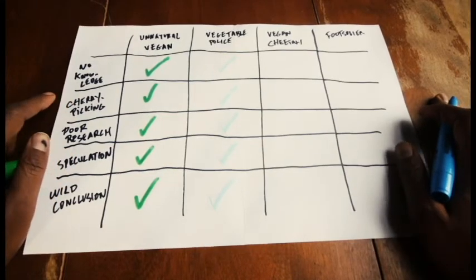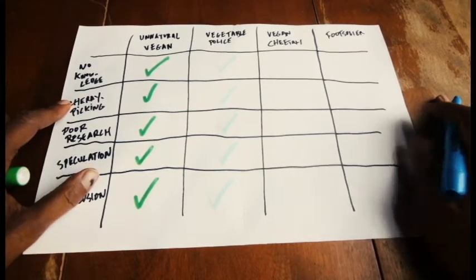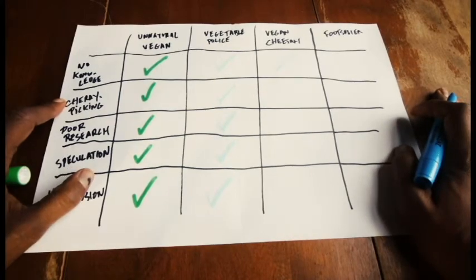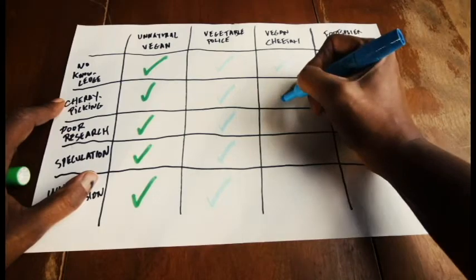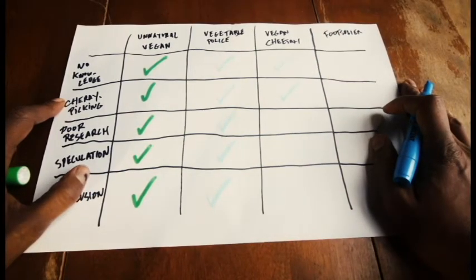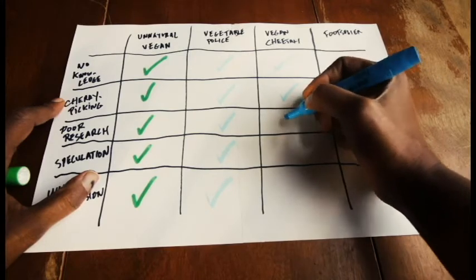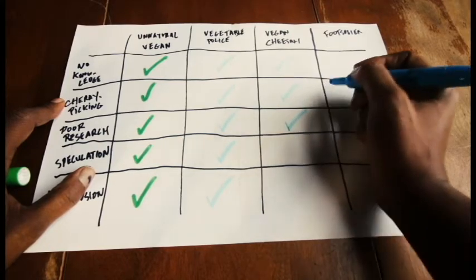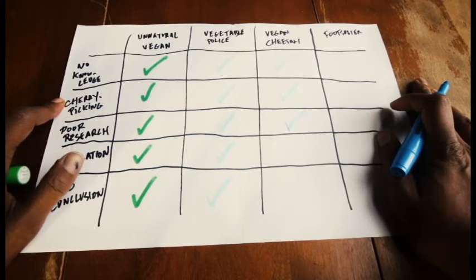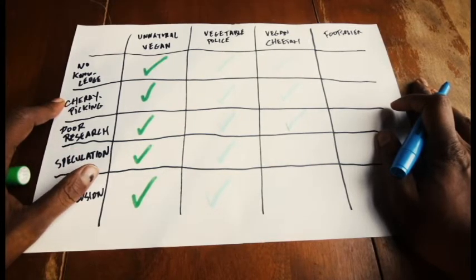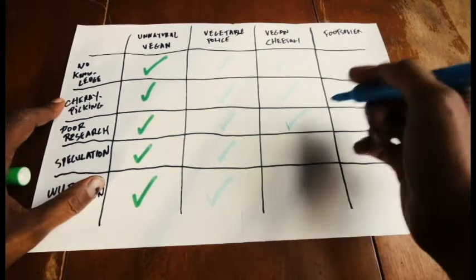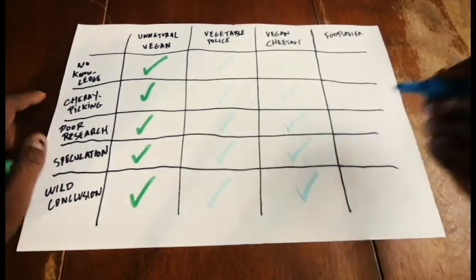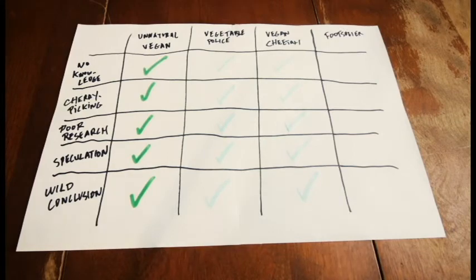Moving right along to Vegan Cheetah. Does Vegan Cheetah talk about things that he has no knowledge of? Absolutely. Does Vegan Cheetah cherry-pick in his presentations? Absolutely. Vegan Cheetah poor research - does Vegan Cheetah do any research? I guess I've heard Vegan Cheetah say a lot that he heard from his little spies or whatever, so I think that's poor research. Speculation? Everybody knows that Vegan Cheetah's big thing - in fact, I think it was a catchphrase: speculation, right? We can only speculate. And then drawing wild conclusions? Absolutely, Vegan Cheetah draws wild conclusions.